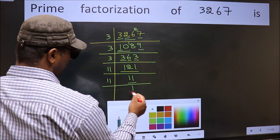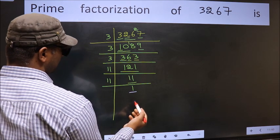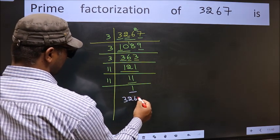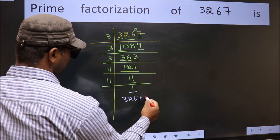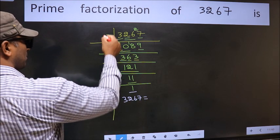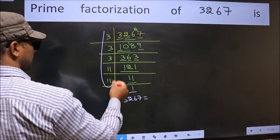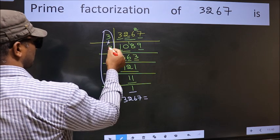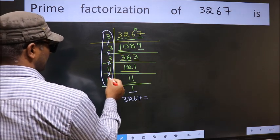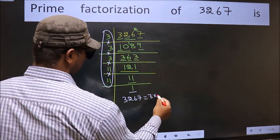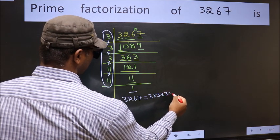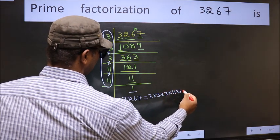So we got 1 here. So the prime factorization of 3267 is the product of these numbers: that is 3 × 3 × 3 × 3 × 11 × 11.